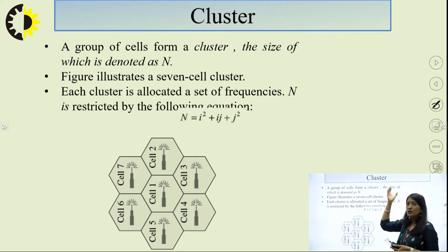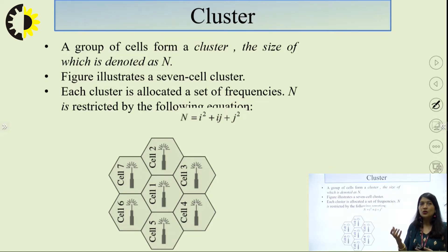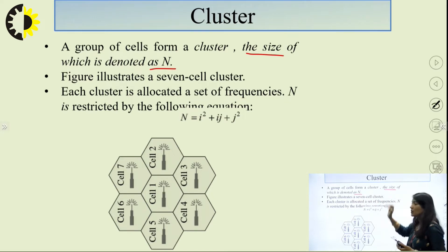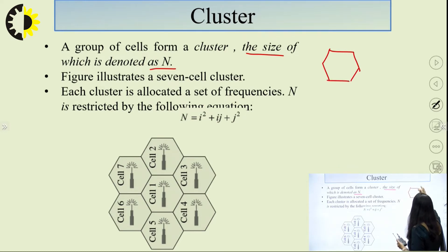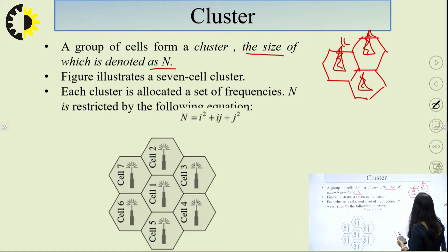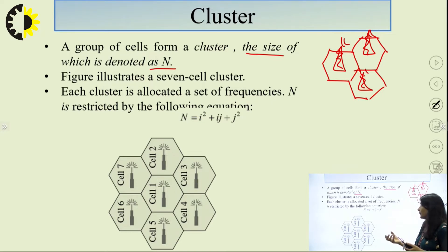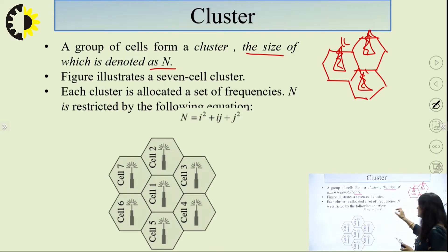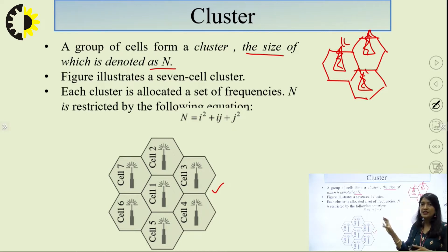A group of cells is known as a cluster, and the cluster size is denoted as capital N. Each cell has its own base station antenna. A cluster size can be 4, 7, 12, or 19 based on a specific formula. This figure shows a 7-cell cluster, where each cluster is allocated a different set of frequencies — cell 1 through cell 7 each use different sets of frequencies.